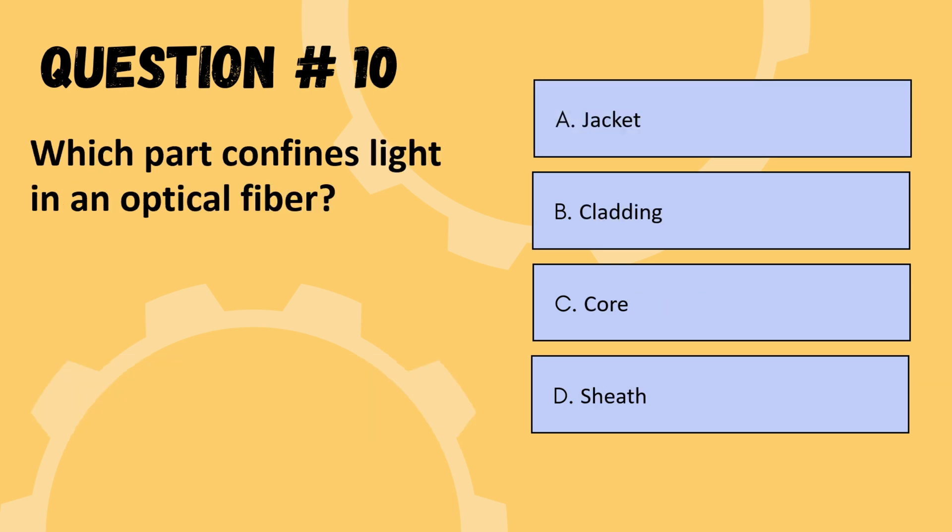Next question: which part confines light in an optical fiber? Options are jacket, cladding, core, or sheath. The correct option is C: core.